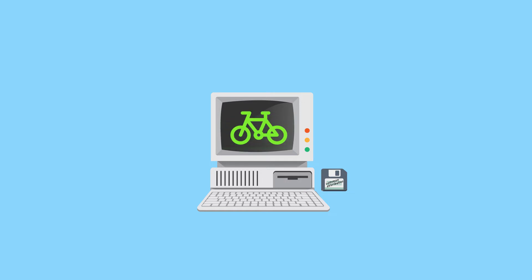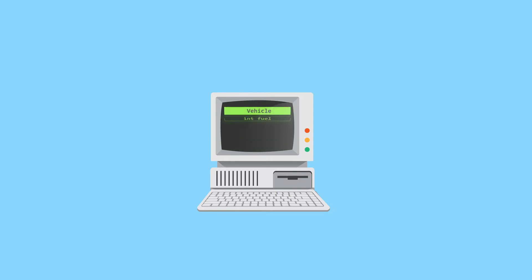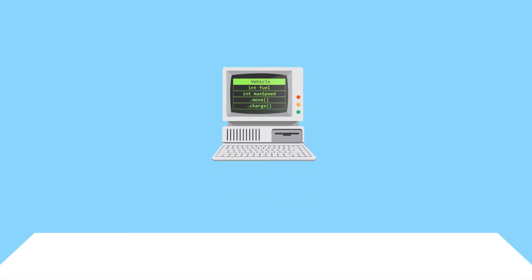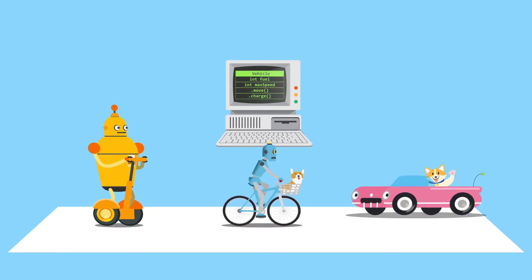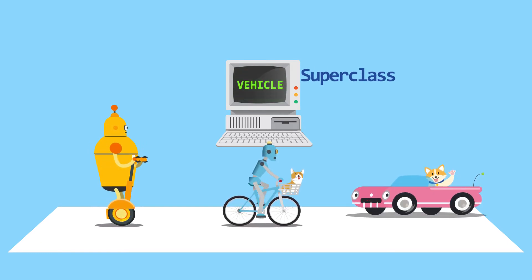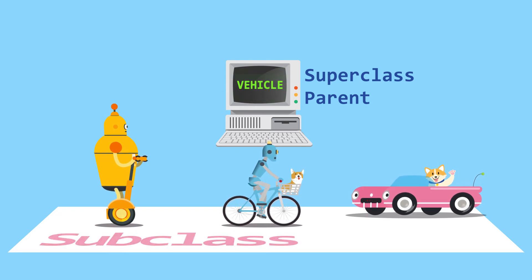The scooter, bicycle, and the car are a type of a vehicle. In Java, we use inheritance to create hierarchies among classes. In this case, we can put the common attributes in the vehicle class and the specific attributes in the individual class. The vehicle class is now the superclass or parent class. The scooter, bicycle, and car classes that inherit the superclass attributes are known as the subclass or child class.